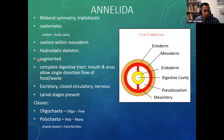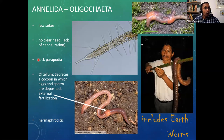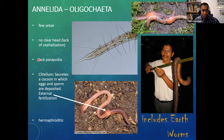Within Annelida we will discuss three groups: Oligochaeta, Polychaeta, and Hirudinea, which includes leeches. Leeches are external parasites — they live on your body, not in it. There is a difference between the internal parasitism of Platyhelminthes and the external parasitism of leeches.